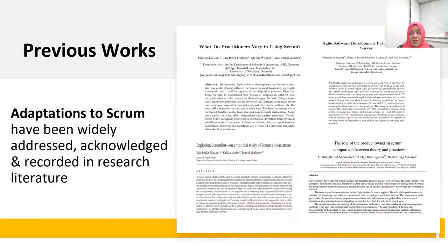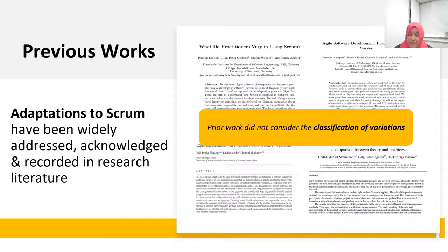With growing popularity and adoption of Scrum, it is no surprise that many organizations today are seen to modify or adapt Scrum to suit their settings. Several studies have reported variations observed in practice either as preliminary findings or as secondary findings. However, details and examples of which specific variations occurred and the potential rationale behind these variations were not investigated in depth. And most importantly, prior work did not consider the classification of variations.